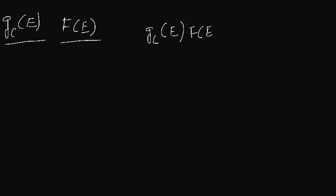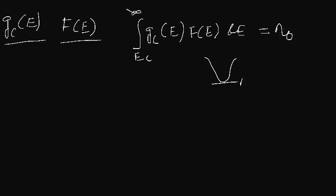The electron concentration in thermal equilibrium is given by integrating gc(e) multiplied by f(e) de over ec to infinity. Here ec is the minimum value of energy in the conduction band. The shape of the conduction band has a minimum energy ec, and we consider any electronic state corresponding to some energy e. To find the number of electrons in the conduction band, we take the limit from ec to infinity.